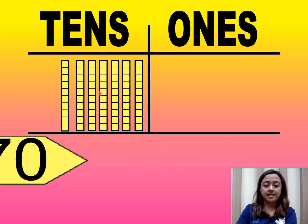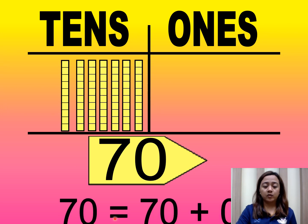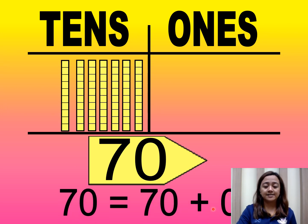So seven tens is equal to seventy. Zero ones is equal to zero. Now let's use the expanded form. In expanded form, seventy equals seventy plus zero. Seventy is seven tens, zero is zero ones.